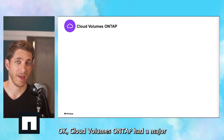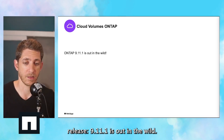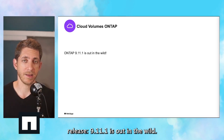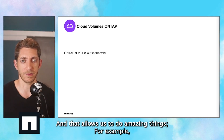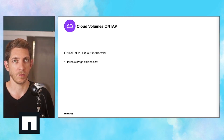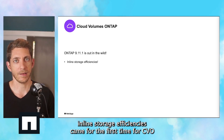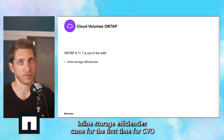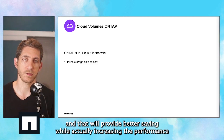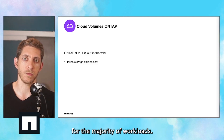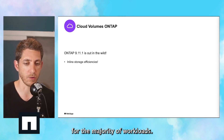Cloud Volumes ONTAP had a major release. 9.11.1 is out in the wild, and that allows us to do amazing things. For example, inline storage efficiencies came for the first time per CVO, and that will provide data savings while actually increasing the performance for the majority of workloads.